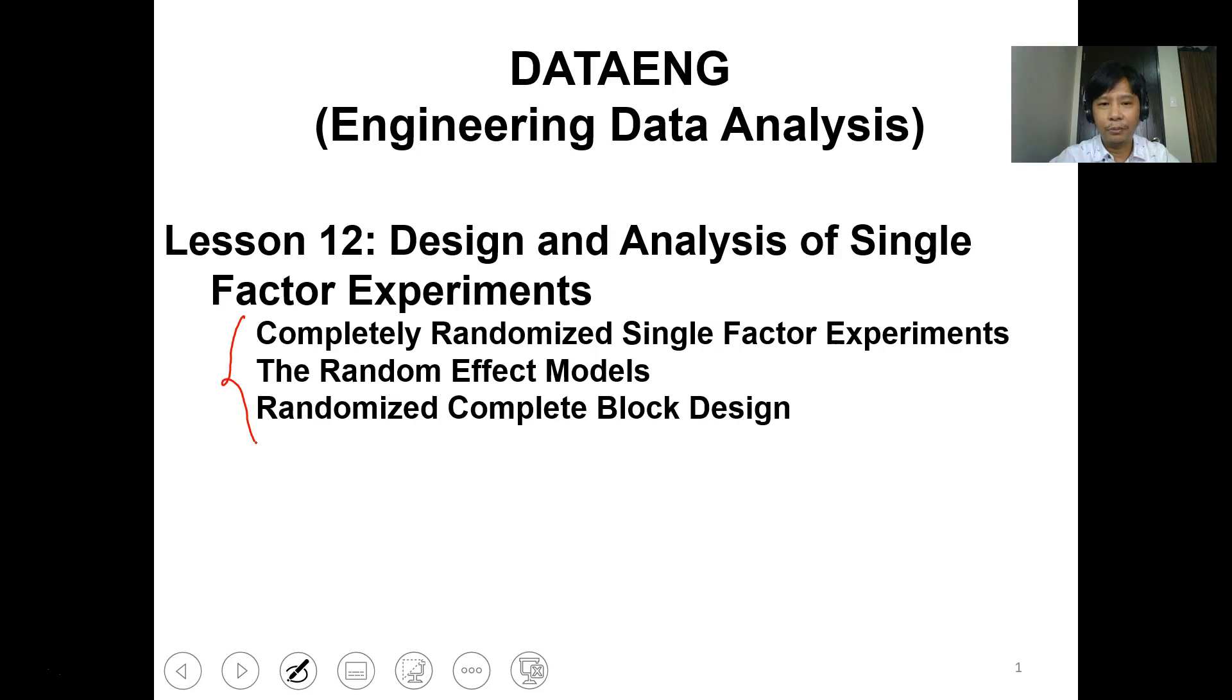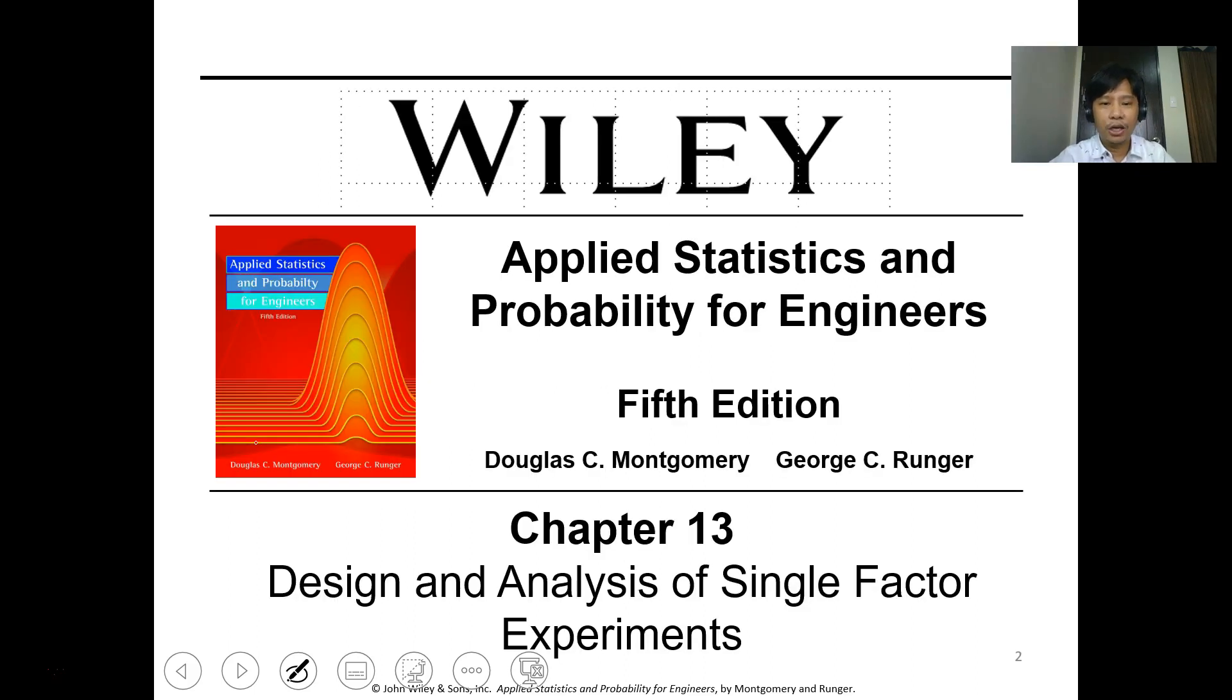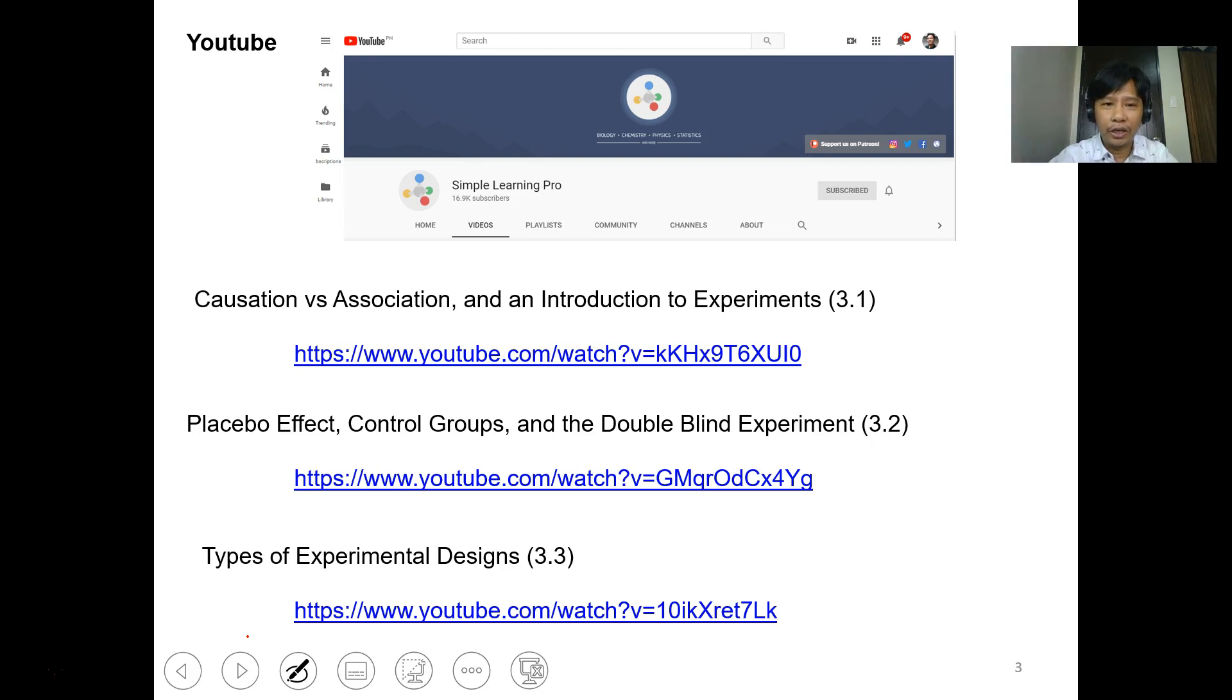This PowerPoint is based on the fifth edition, but our textbook is Applied Statistics and Probability for Engineers, sixth edition, by the same authors. This is chapter 13 of the textbook. I already posted this one on Canvas.